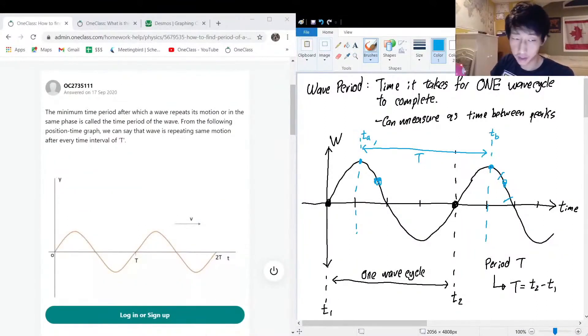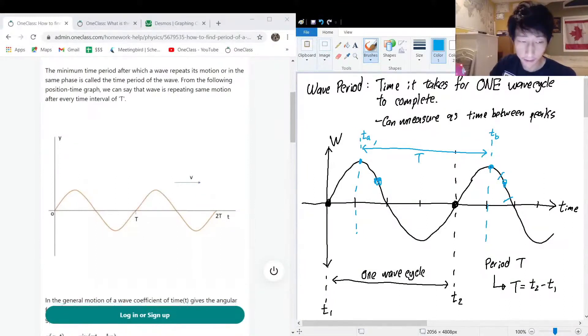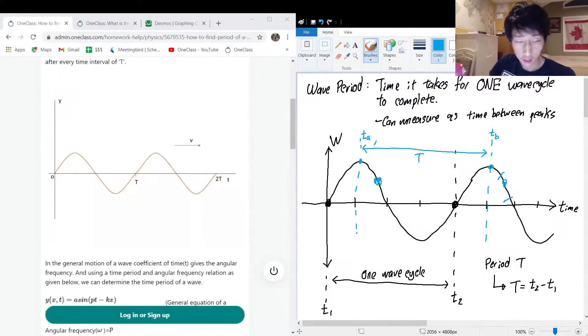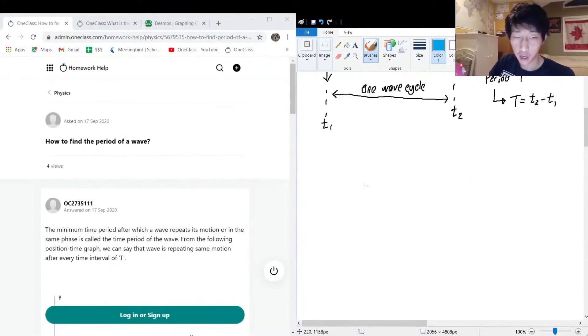So yeah, they have this example here. You can see this is the same sinusoidal function as an example, and you can see that as soon as it repeats, that will be your T point, which is the time of one period. And so this will be how you do it visually by looking at a graph.